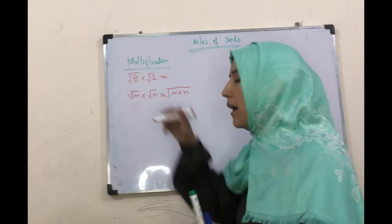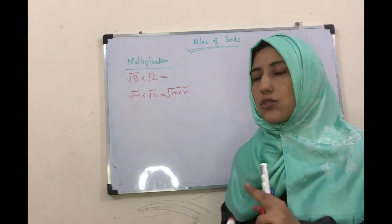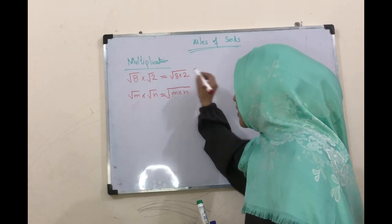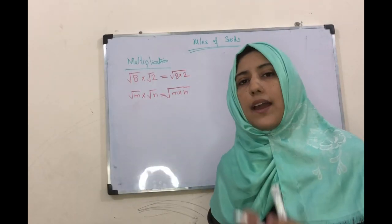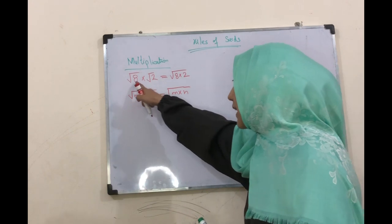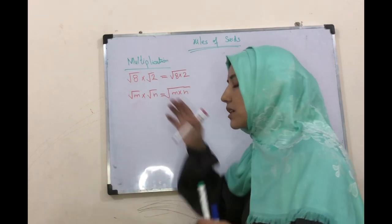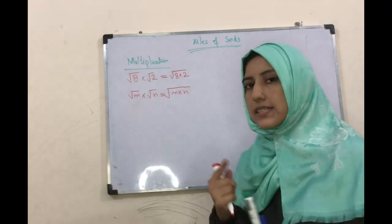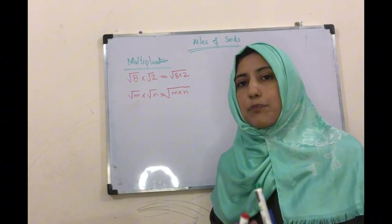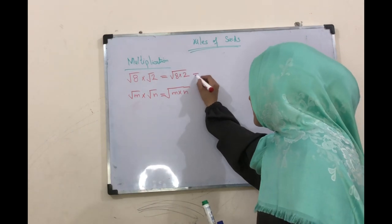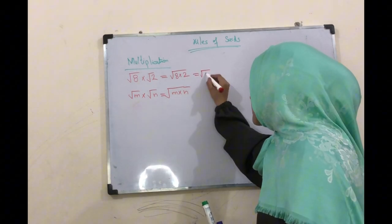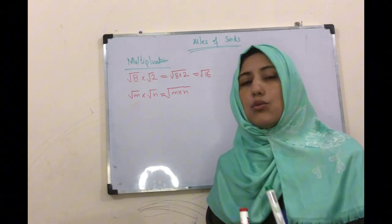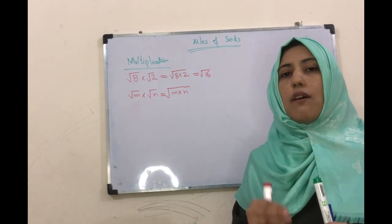یہاں پہ جب ہم یہ rule apply کریں گے تو ہمارے پاس کیا ہو جائے گا: √8 × √2. یہاں میں rule apply کر چکی ہوں - وہ rule کیا ہے کہ ہمارے پاس اگر دو surds given ہیں اور ہم نے ان کو multiply کرنا ہے تو وہ ہمارے پاس ایک surd میں آ جائیں گے۔ تو اس کے ساتھ یہ کیا ہو جائے گا: √(8×2) = √16. This is actually the rule of multiplication of surds.